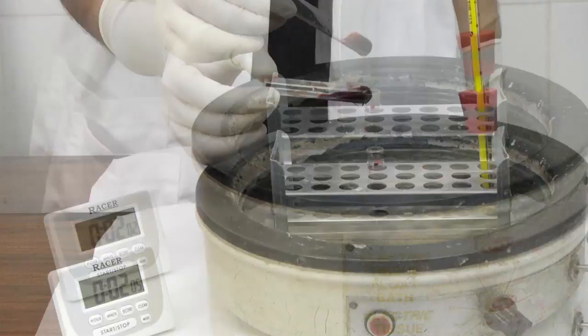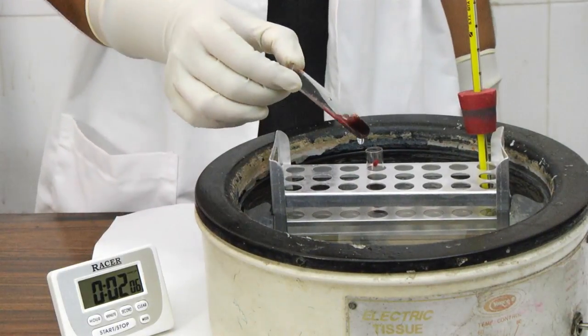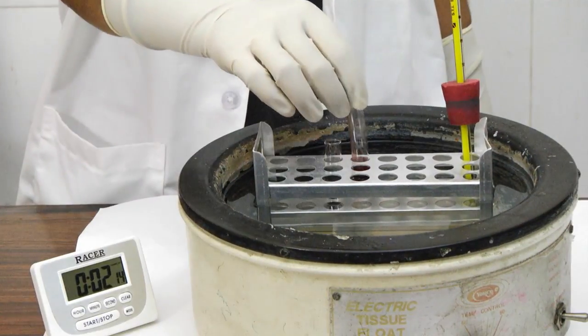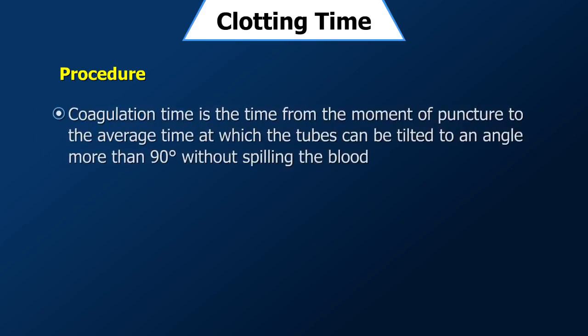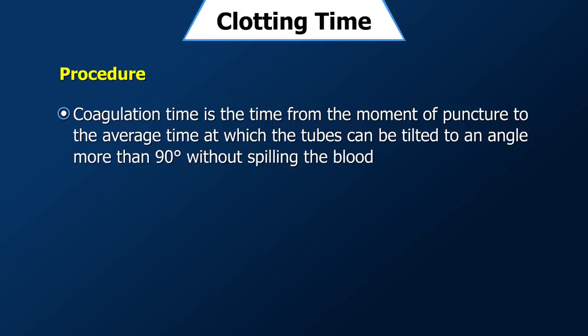After two minutes, tilt the tubes to check for blood clot. Check for clotting in both tubes at every 30 seconds. Coagulation time is the time from the moment of puncture to the average time at which the tubes can be tilted to an angle more than 90 degrees without spilling the blood.